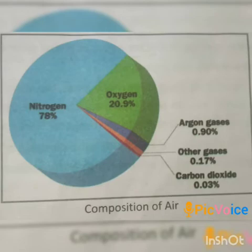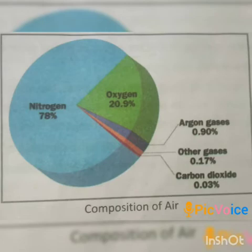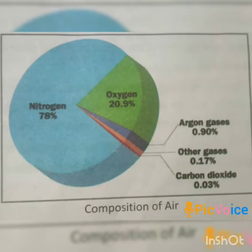It is found that up to an altitude of 90 kilometers from the earth's surface, the proportion of three major gases present in the atmosphere is uniform. These major gases are nitrogen, oxygen, and carbon dioxide. But above 90 kilometers, the composition begins to change due to an increase in the proportion of lighter gases like helium. Apart from these gases, the air also contains some amount of dust particles and water vapors.